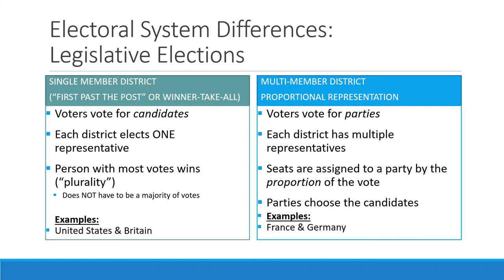The other type of electoral system is called a multi-member district proportional representation system. Here the districts don't just have one winner — they have multiple winners. Each district has a bunch of representatives in the legislature. When you vote, you vote for a party rather than the name of a person, and the seats in that district are assigned to the parties by the proportion of the vote. The parties decide which of their members take the seats.